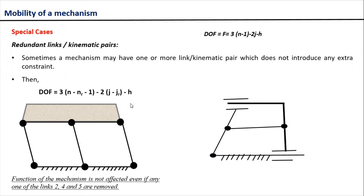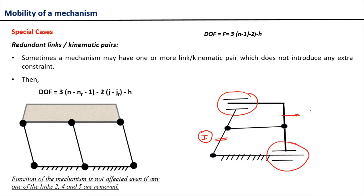Now let us take another example of a mechanism with a redundant kinematic pair. In this mechanism we have 2 kinematic pairs. Assuming one link as the input link and another as the output link, if we remove either one of these kinematic pairs the relative motion between the input and output links remains the same. So this is one example of a redundant kinematic pair.